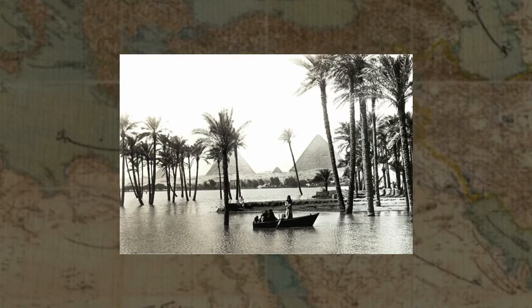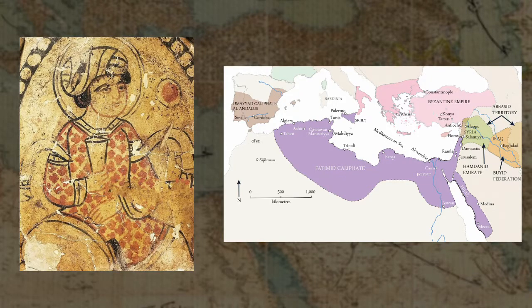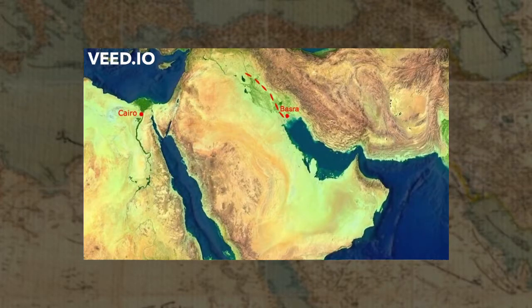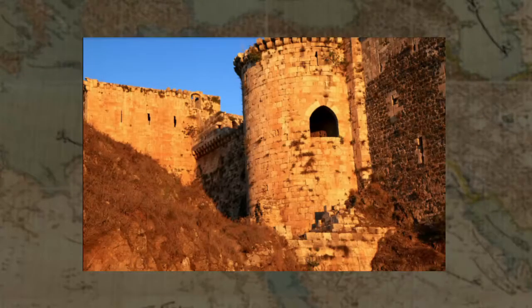One of these treatises about regulating the floods of the Nile even reached the ears of the Caliph al-Hakim of the Fatimid Caliphate. Interested in al-Haytham's treatise, the Caliph sought the scholar and brought him to his court in Cairo to discuss the regulation of the Nile. After preliminary sketches, however, al-Haytham was forced to concede the impractical nature of his design and was imprisoned by al-Hakim for insubordination.